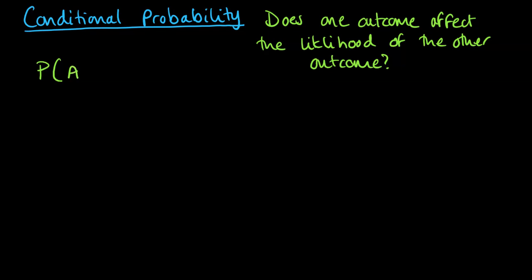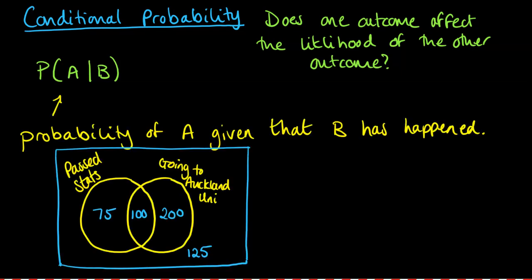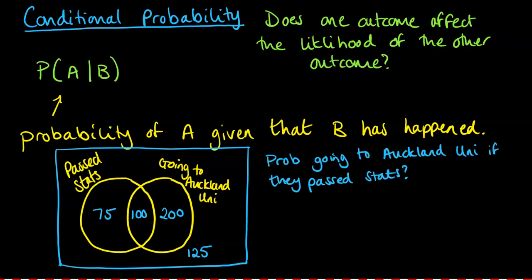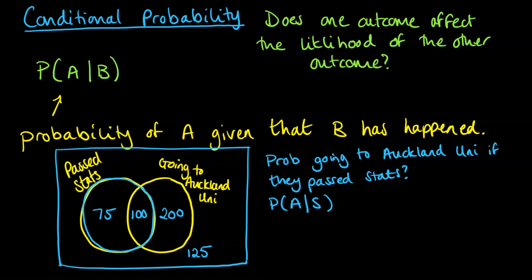The notation used for this is a straight down line. You read this as the probability of A given that B has happened. I'll use an example to demonstrate this. I've got this Venn diagram of a group of 500 year 13 students - some passed stats, some are going to Auckland Uni, some are doing both, and some are doing none. The question is: what's the probability they're going to Auckland University if they passed stats? This is P(Auckland Uni | passed stats). We're only looking at the 175 students that passed stats, and of those, how many are going to Auckland Uni? We have 100 out of 175.